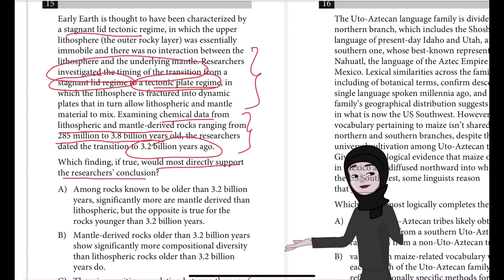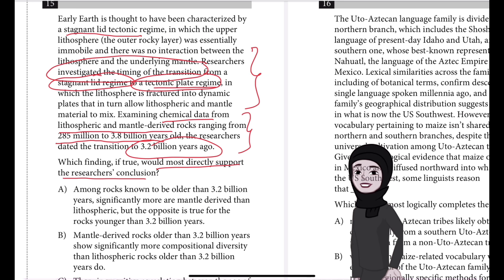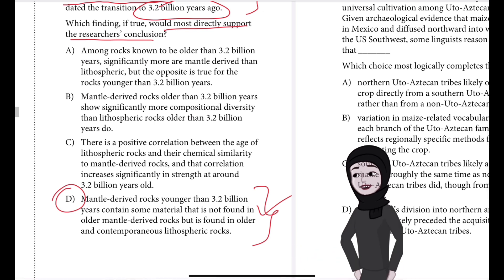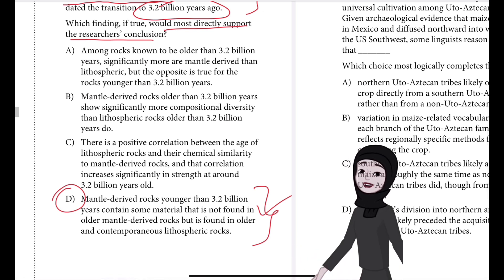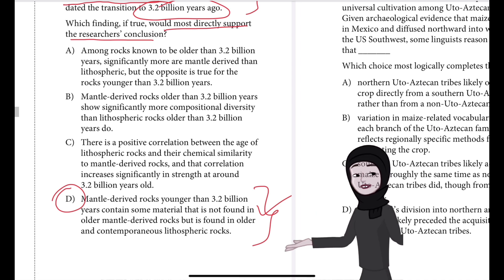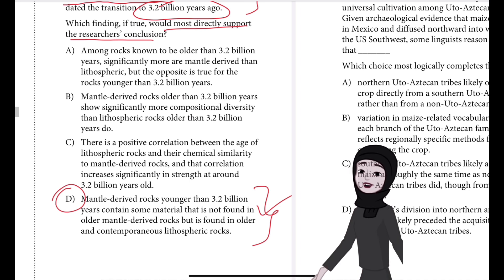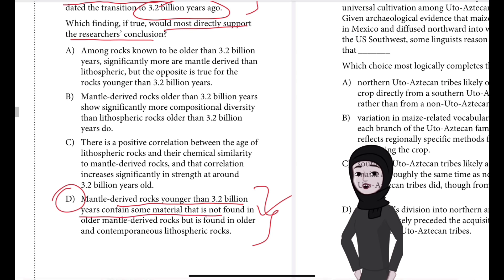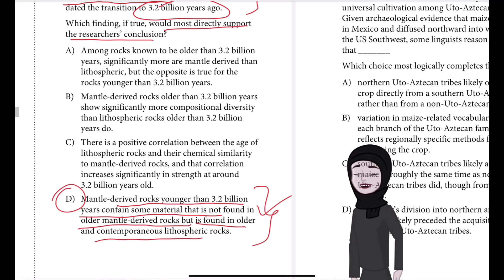If mantle-derived rocks younger than 3.2 billion years contain material not found in older mantle-derived rocks, that material must have originated somewhere other than the mantle. And if this material is found in both older and contemporaneous lithospheric rocks, that would imply that the lithosphere was able to mix with mantle material beginning around 3.2 billion years ago, as the researchers concluded — supporting the onset of the tectonic plate regime at that time.